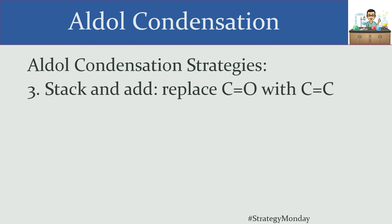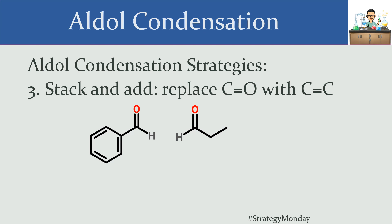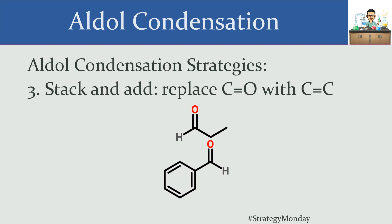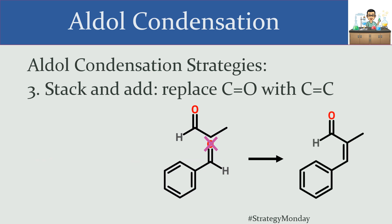For the final step, we take our two molecules and stack and add. We locate our alpha carbon, then take the other molecule and place it so that the carbonyl carbon — the one without the alpha carbon — is immediately below the alpha carbon. Both of those carbons are going to form a double bond together, so we eliminate that oxygen and form a new carbon-carbon double bond. The product has one, two, three, four carbons plus a phenyl substituent — exactly matching our prediction.